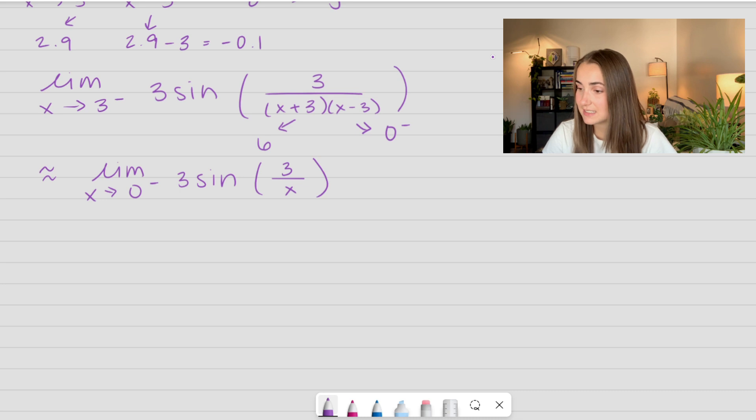So that means this is going to blow up to negative infinity. So again, if I rewrite my limit, I get x approaches negative infinity of 3 times sine of x, right? Because 3 over 0 from the right side goes to negative infinity.